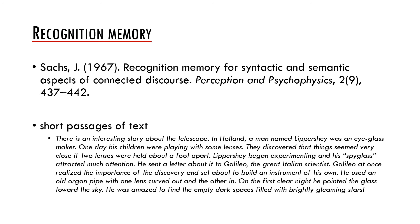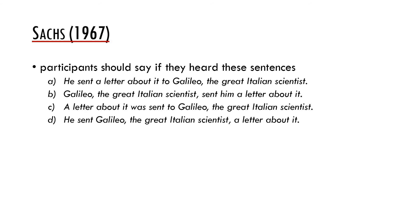Afterwards, she asked the participants whether they heard a certain sentence or not. Each participant had to say whether he or she heard one of these sentences. You can see that the meaning of sentences A, C and D is the same — only word order or the syntactic properties are changed. However, sentence B conveys a different meaning. Sachs found that the participants responded similarly to sentences A, C and D, but only few agreed that they heard sentence B.